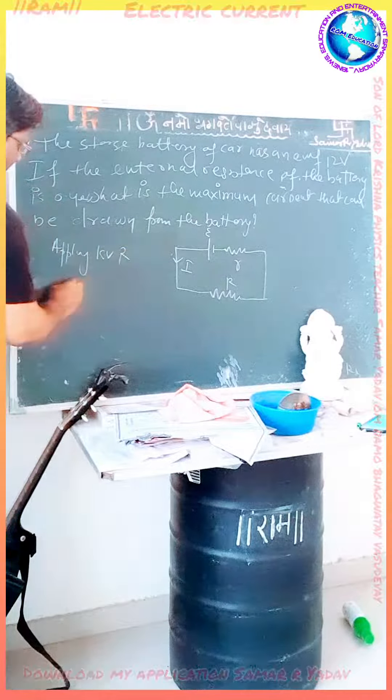Now if R decreases, then the current will increase. When R equals 0, then the current will be maximum.